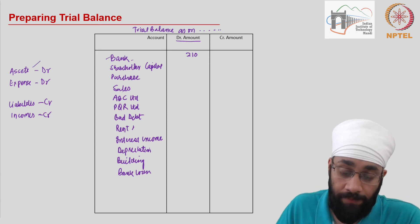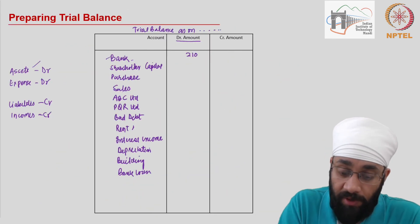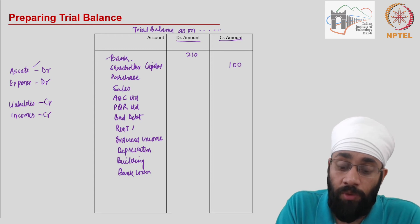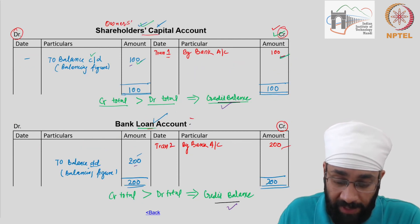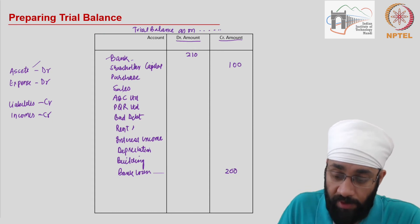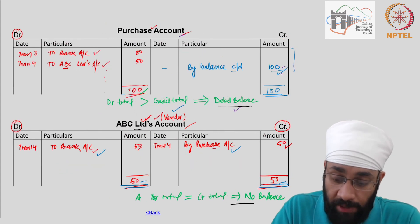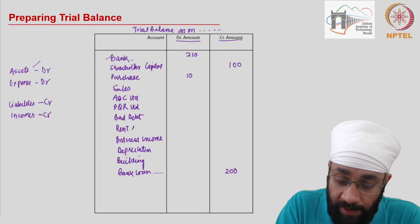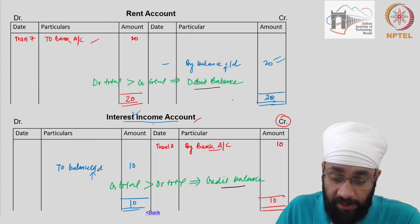The next account was shareholders capital account — it has a balance of 100 and it's a credit balance, so I'm writing this in the second column designated for all credit balances. Next up you have bank loan account which has a balance of 200 — credit balance because it's a liability. Then you have purchase account which has 100 — a debit balance. ABC Limited has no balance, and PQR also does not have any balance — we will write those as nil.